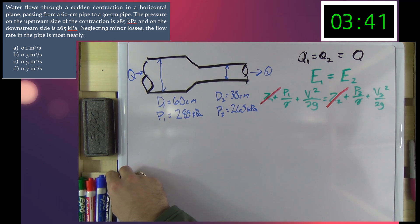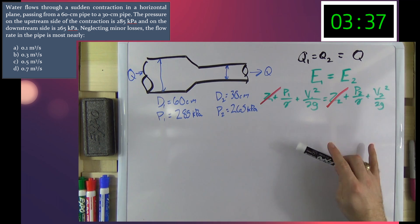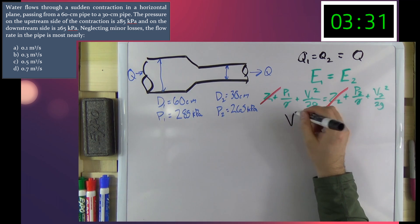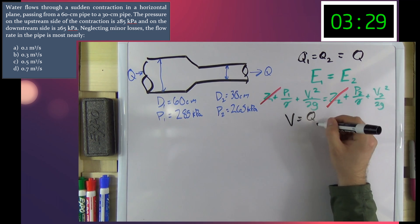Alright, looking at that problem, we know P1 and P2. We know gamma and we know G. We don't know velocity though. But what we do know is that velocity is equal to the flow rate divided by area.